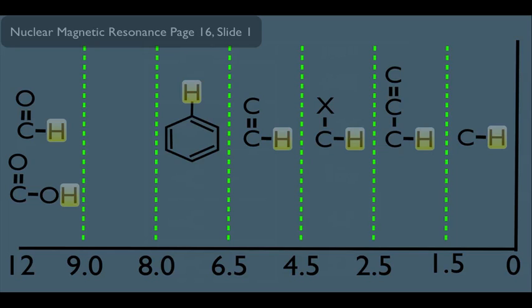Notice this chart goes from 0 on the right all the way to 12 on the left. Typical alkane hydrogens right here peak at around less than 1.5. You'll notice right here this is an allylic hydrogen. They would be slightly more shifted because they are in proximity to a double bond.